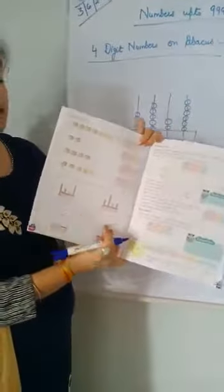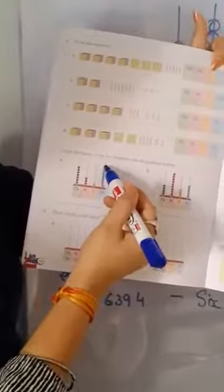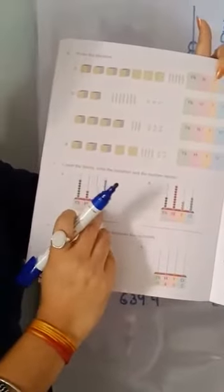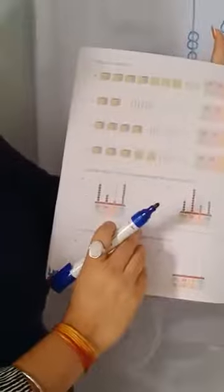Write the numbers. You have to write the numbers — means in thousands, hundreds, tens, and ones what is given, and you have to write the numbers here. And in question number seven, count the beads, write the numbers, and write the number names. So you have to write the number names and do this exercise.